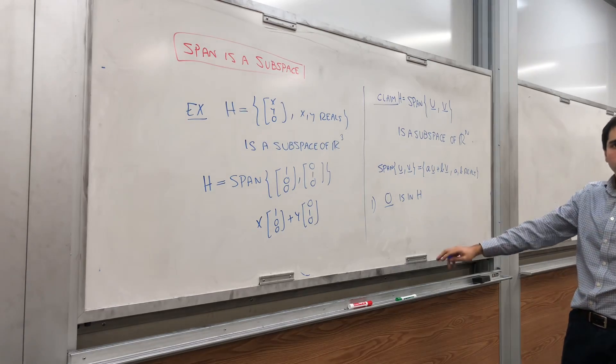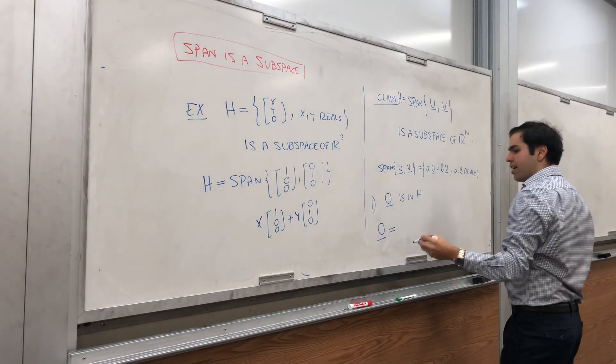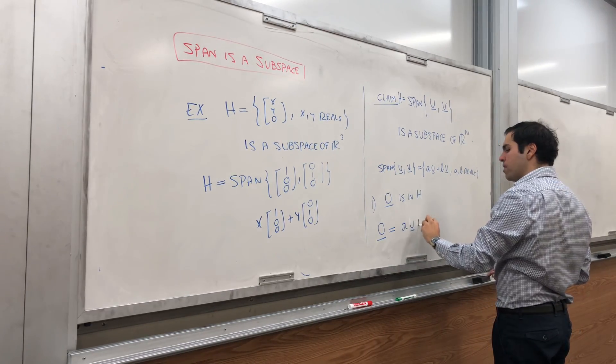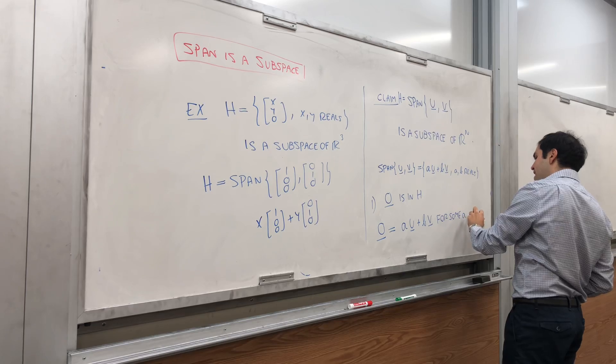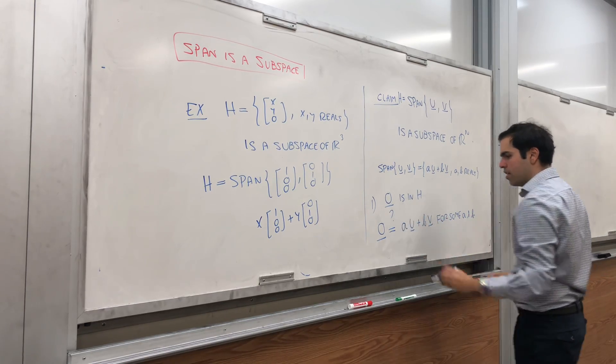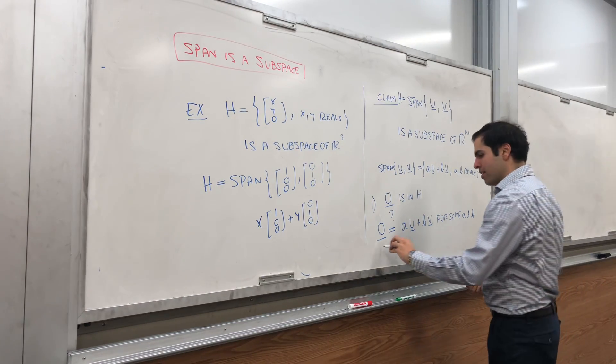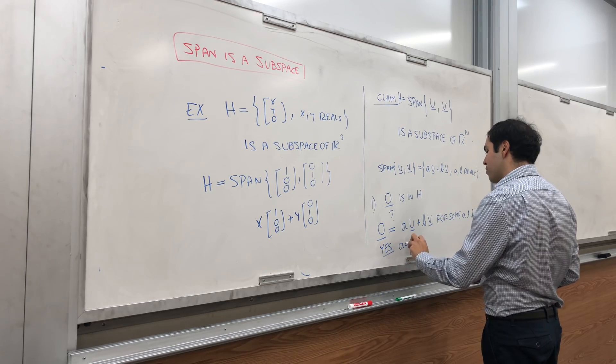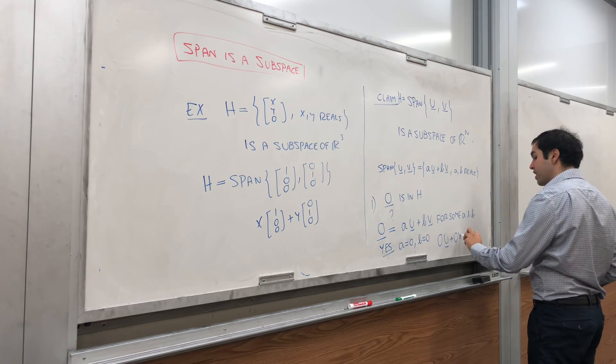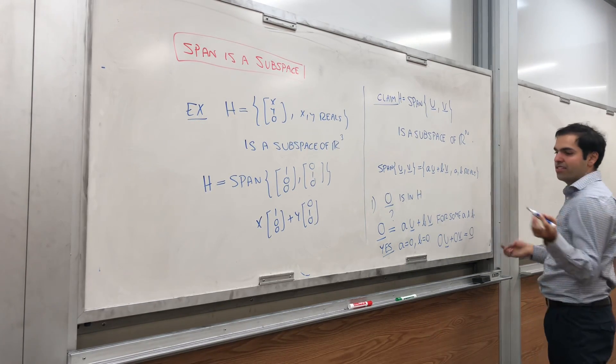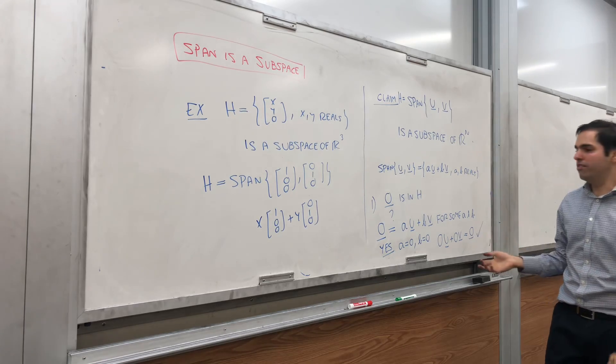And 0 is just a vector with all components 0. So the question is, can you write 0 of the form au plus bv for some a and b? Indeed, you can. Just let a and b be 0. So yes, a equals 0 and b equals 0. Because 0 times u plus 0 times v, well, that's just a 0 vector. Indeed, 0 is a linear combination of u and v, the trivial one.